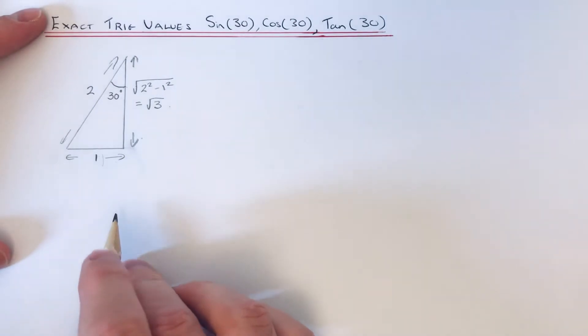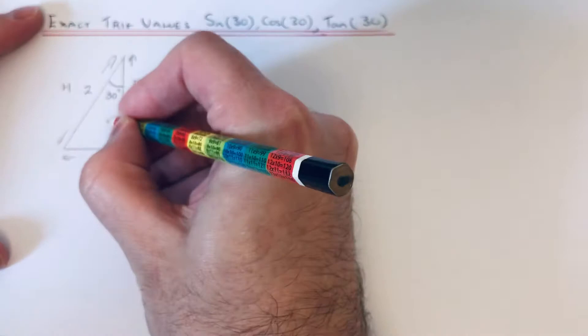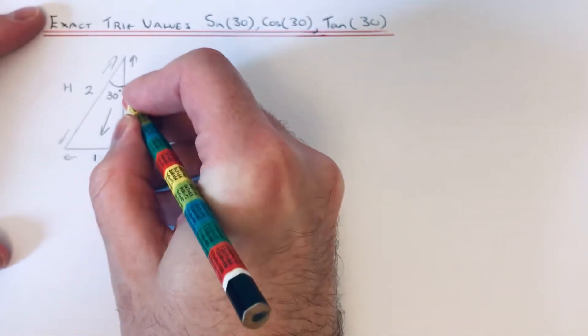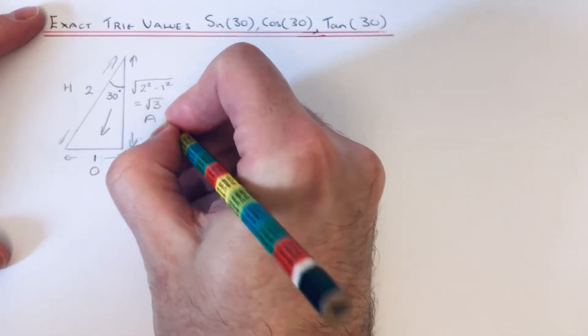If you label the triangle then, this longest side is H, the side opposite the angle is O, and the third side is the adjacent side.